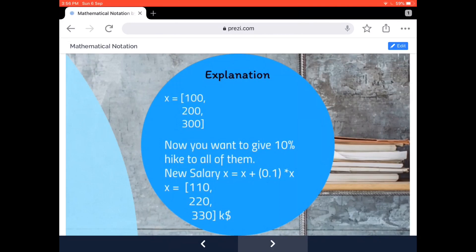Now if I want to give 10% hike to all of them, my new salary would be x plus 0.1 times x. That means with the list of numbers I initially had—100, 200, and 300—I want to conduct some operations. It can be multiplication, addition, subtraction, division, whatever I want. It's technically called a unary operation. After that operation, I'll get back some new numbers: x equals 110, 220, and 330 in this case.